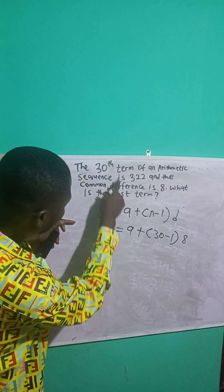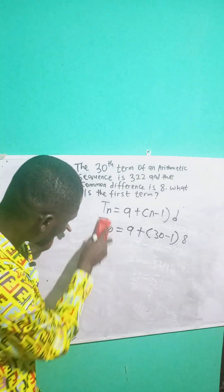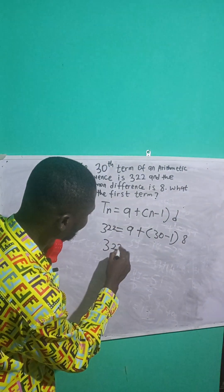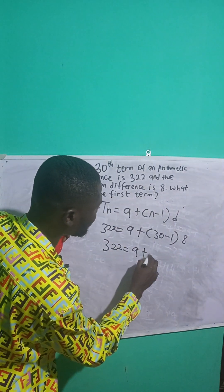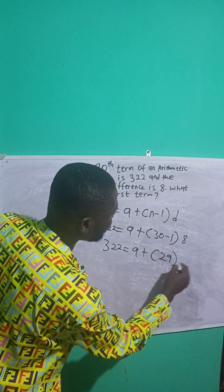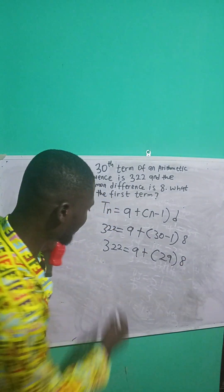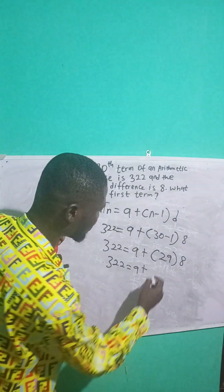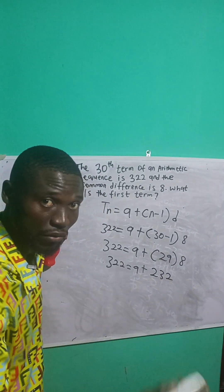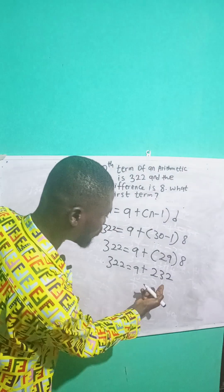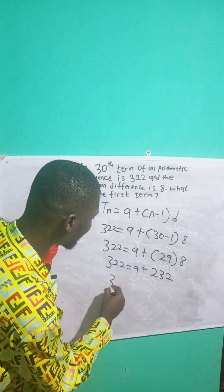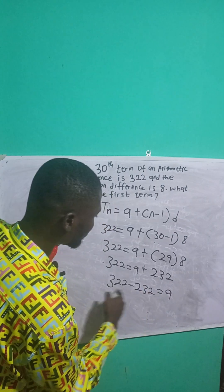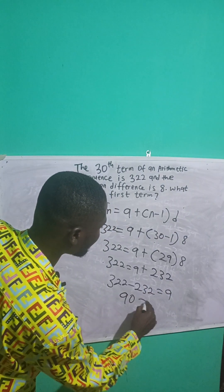They said that the 30th term is 322, so let me write 322 here. So I have that 322 is equal to a plus 30 minus 1, which is 29, times 8. So 322 is equal to a plus 29 times 8, which is 232. I will transpose this to the left-hand side, so it becomes 322 minus 232 is equal to a. That gives you 90 is equal to a.